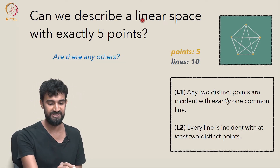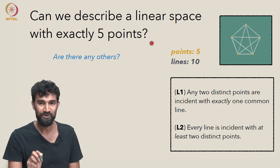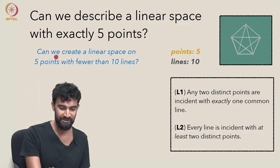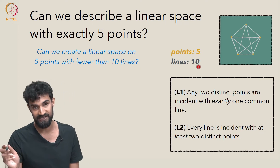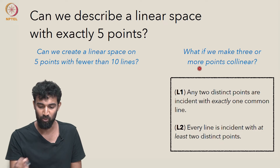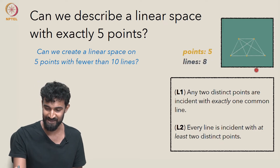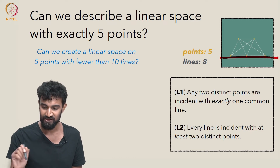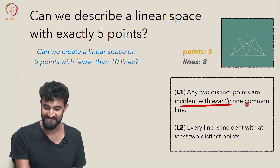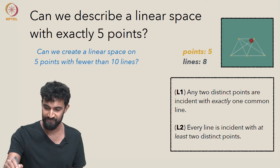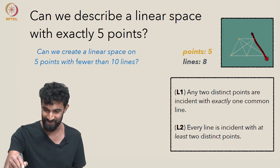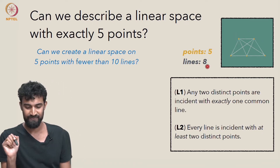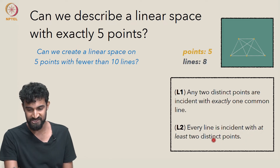Are there any other linear spaces consisting of exactly five points? Can we create a linear space on five points with fewer than ten lines? One strategy is to make three or more points collinear. If we make three points collinear, we have one line connecting those three. We still need every two distinct points to have exactly one common line, which requires several additional lines — all in all, eight lines. And every line here has at least two distinct points; the collinear line even has three.